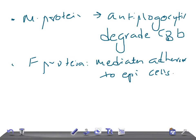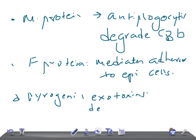So we've covered capsular hyaluronic acid, cell wall polysaccharides, M protein, and F protein. The next virulence factor of Group A Streptococcus is pyrogenic exotoxins. These exotoxins mediate pyrogenicity, enhancement of delayed hypersensitivity, susceptibility to endotoxin cytotoxicity, non-specific mitogenicity for T cells, immunosuppression of B cell functions, and production of scarlatiniform rash.